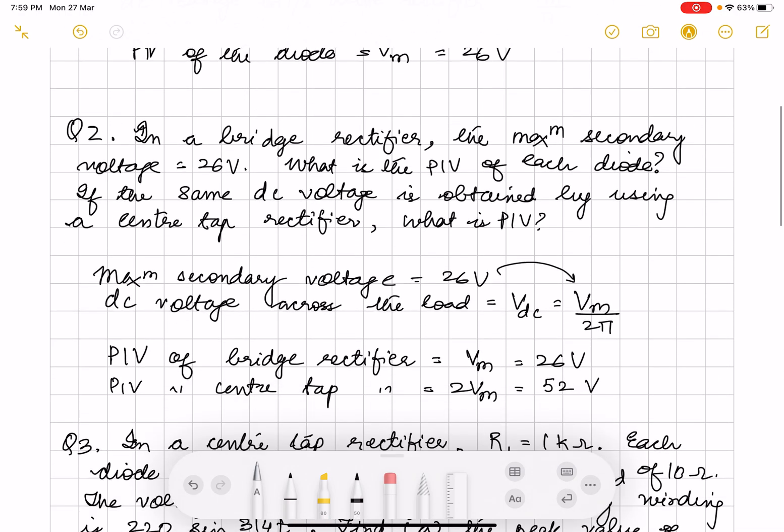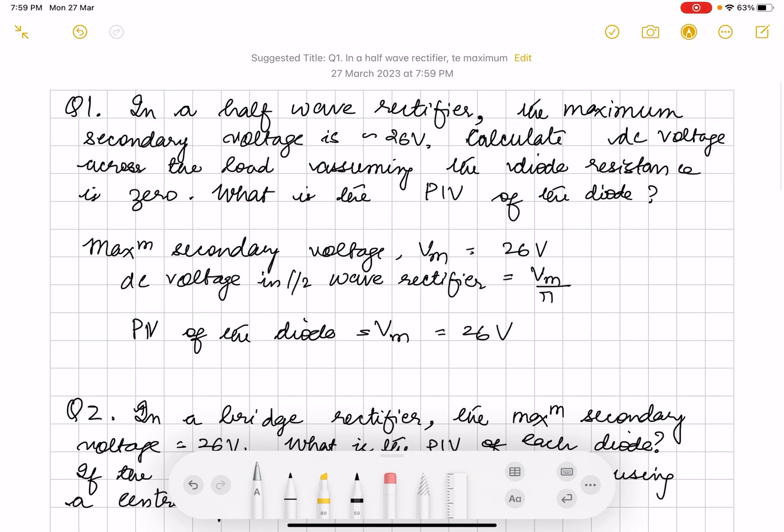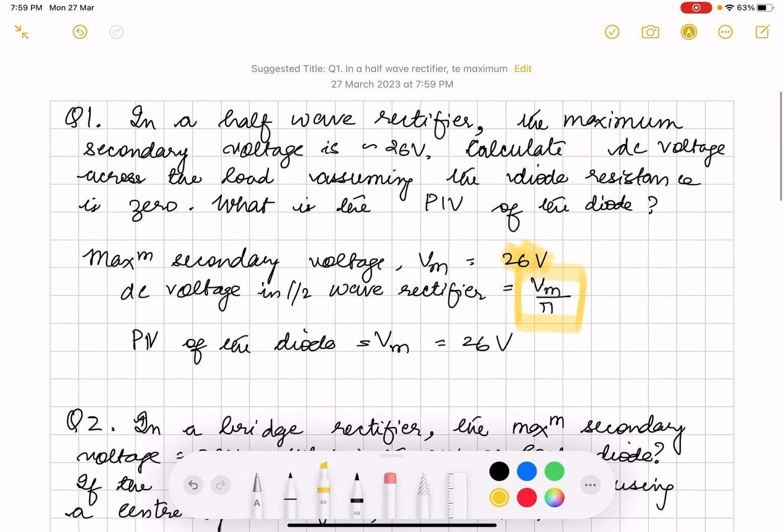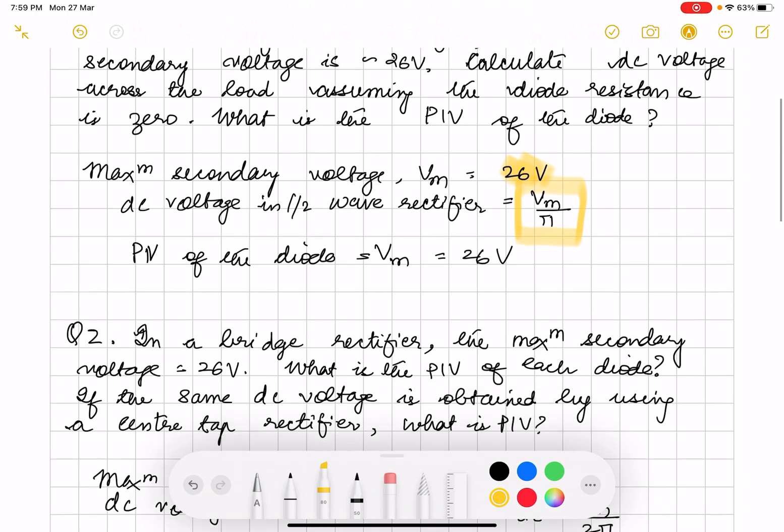So the maximum secondary voltage is nothing but Vm, which is 26 volt. The DC voltage in half wave rectifier is given by Vm over pi, so you can put the value of Vm here and find out the answer. The PIV of the diode is Vm in case of half wave rectifier, so it stays as 26 volt. This should be easy.